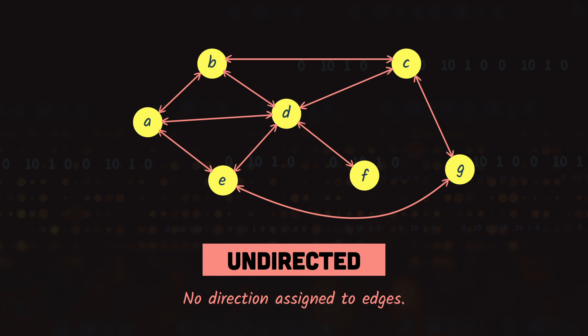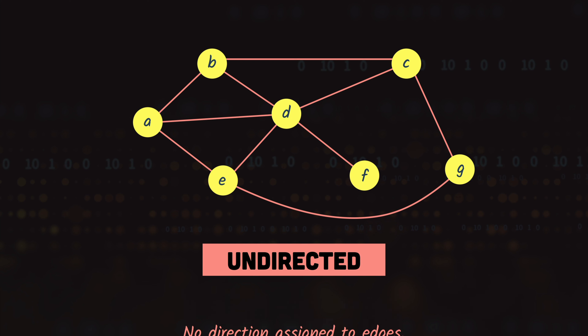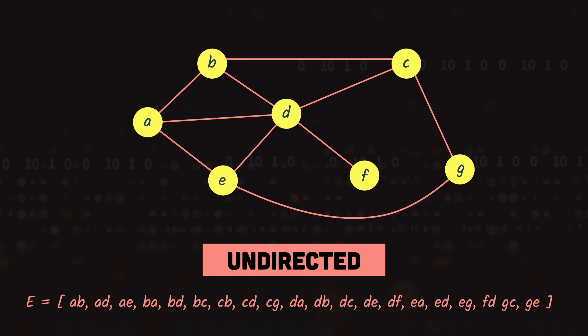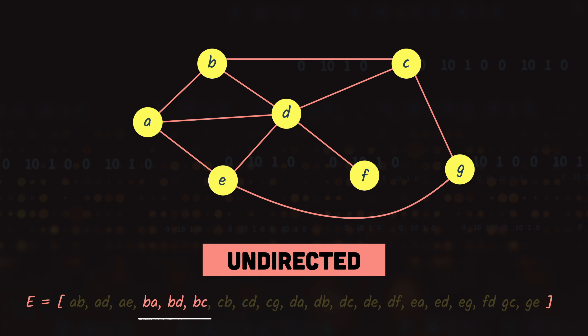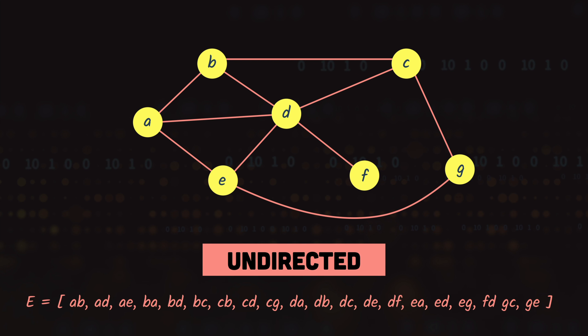For this undirected graph, the edge list would be: from A we can travel to B, D, and E; from B to A, D, and C; from C to B, D, and G; and so on.